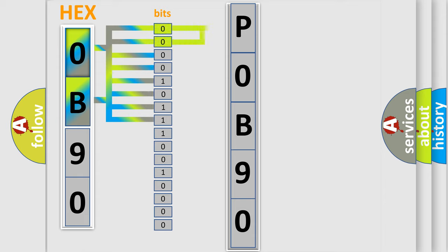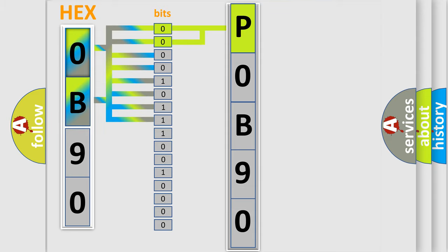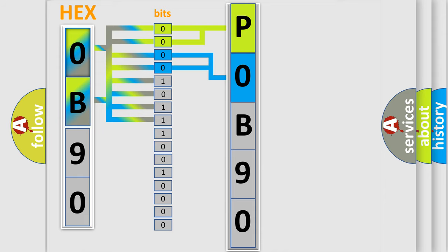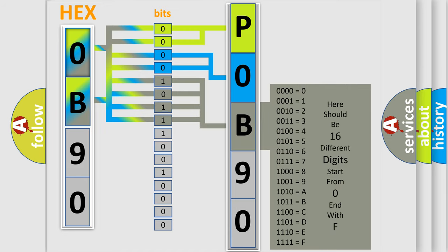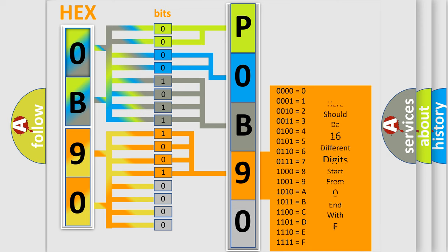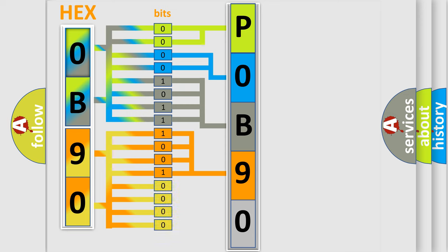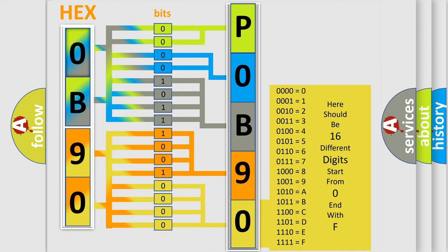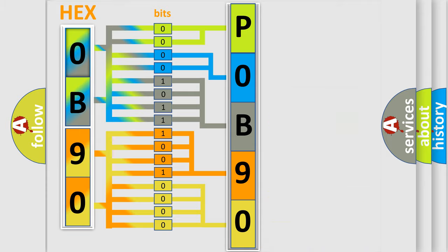By combining the first two bits, the basic character of the error code is expressed. The next two bits determine the second character. The last four bits of the first byte define the third character of the code. The second byte is composed of a combination of eight bits: the first four bits determine the fourth character, and the last four bits define the fifth character. A single byte conceals 256 possible combinations. We now know how the diagnostic tool translates the received information into a more comprehensible format.